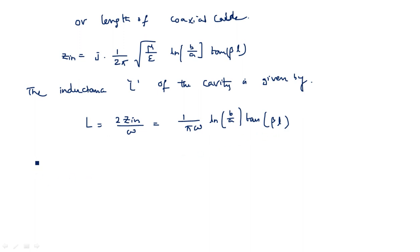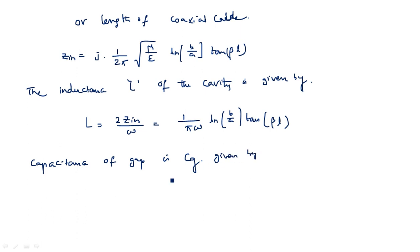The capacitance of the gap — where the re-entrant cavities are connected internally — is denoted C_g. That capacitance due to the gap is given by: C_g = ε·πa²/t, where the area is πa² and t is the thickness of the gap.